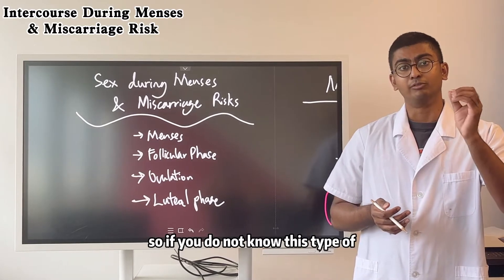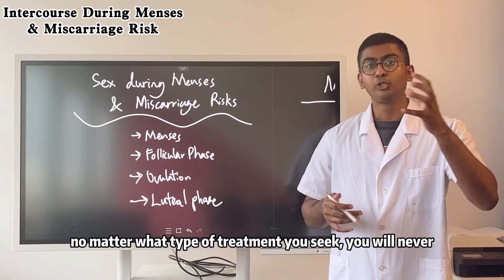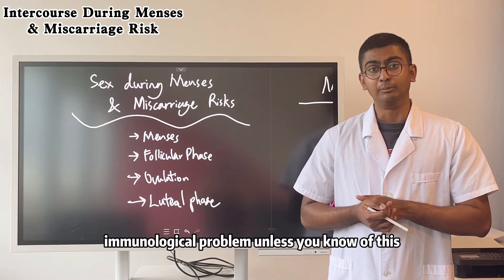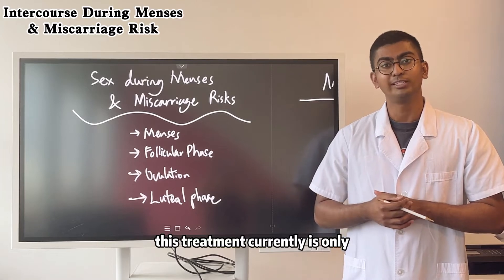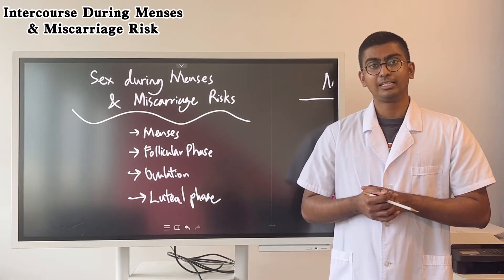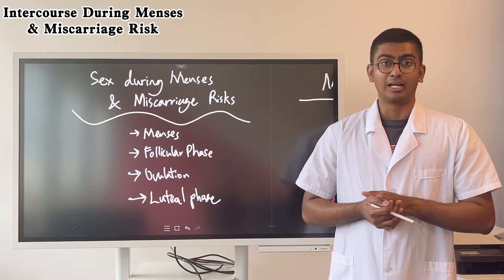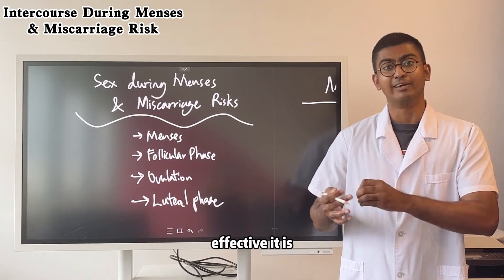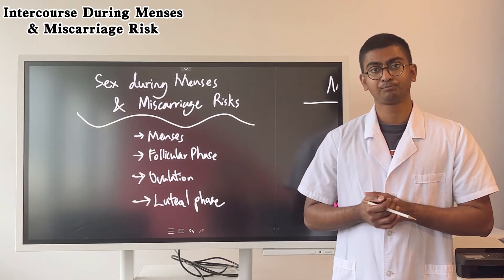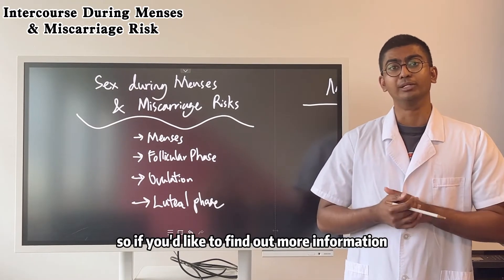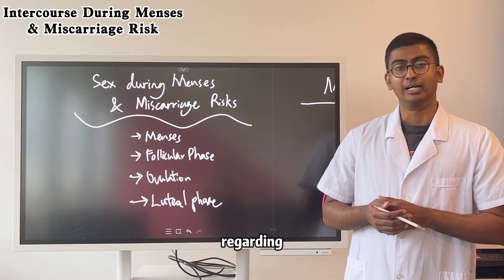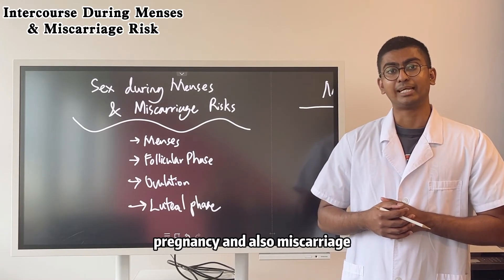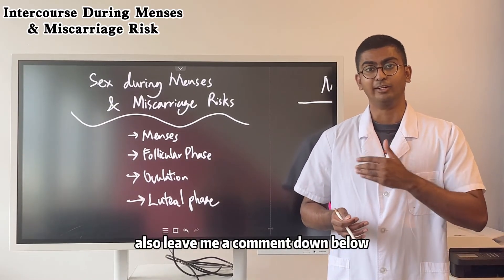So if you do not know this type of occurrence, no matter what type of treatment you seek, you will never end up solving this immunological problem. This treatment is currently only available at Anti-Hospital, and it's highly effective. It also comes with a full money-back guarantee because of how effective it is in neutralising this antibody. If you'd like to find out more information or have similar questions regarding menstruation, pregnancy, and miscarriage, please do visit the website and also leave a comment down below.